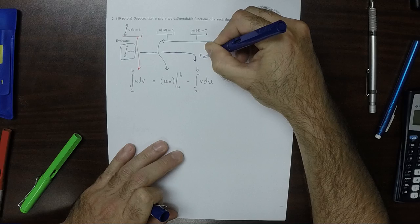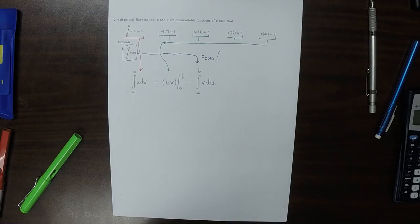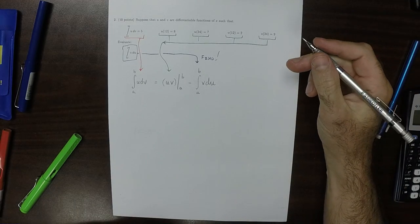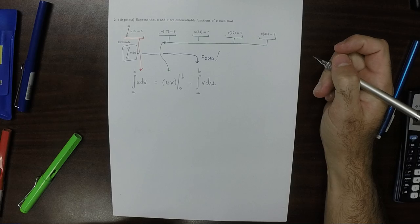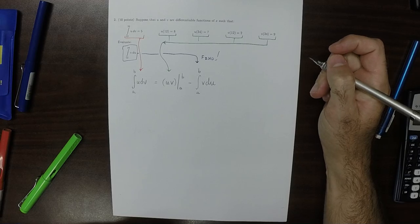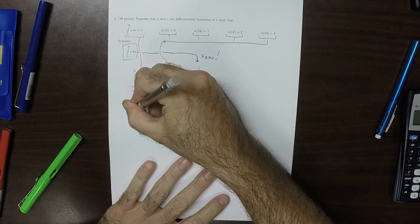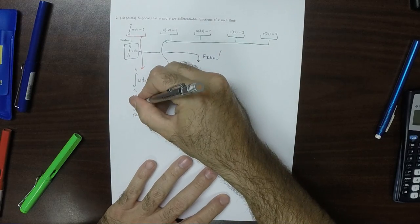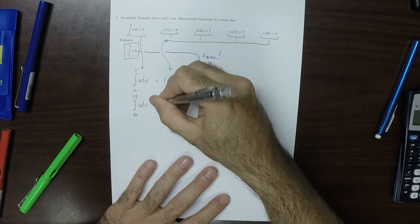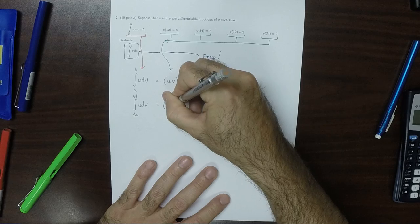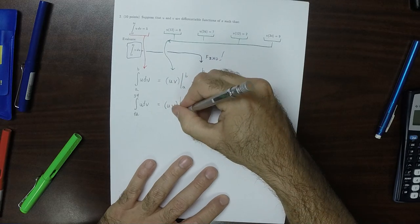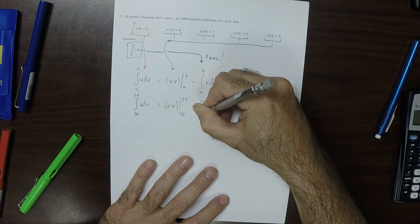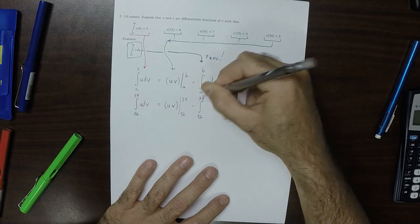We're supposed to find that one. So really this exercise is just asking you to plug in all the things that you know. So specifically, since the limits are 12 to 34, the integral from 12 to 34 of u dv is uv from 12 to 34 minus the integral from 12 to 34 of v du.